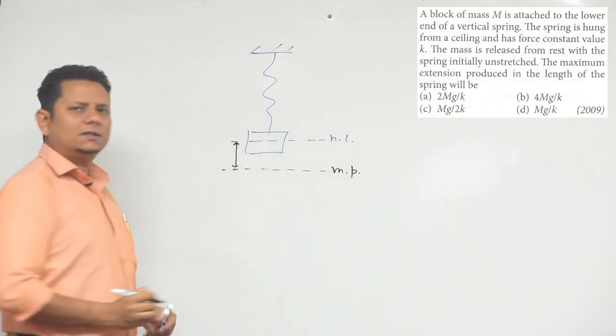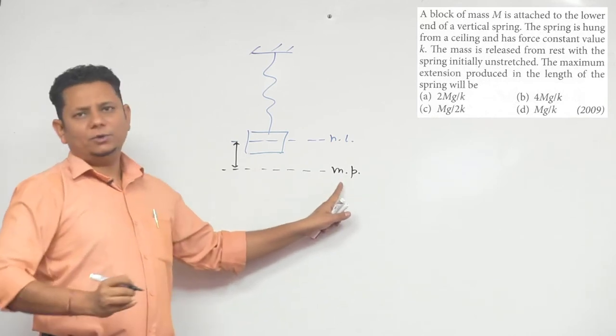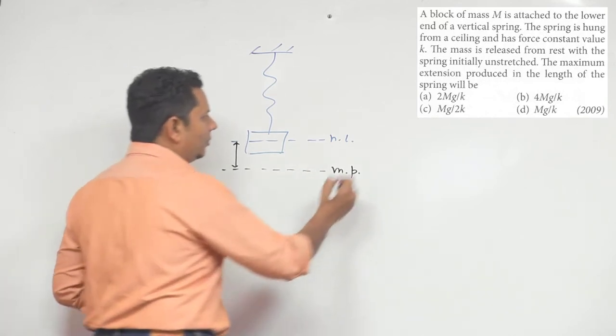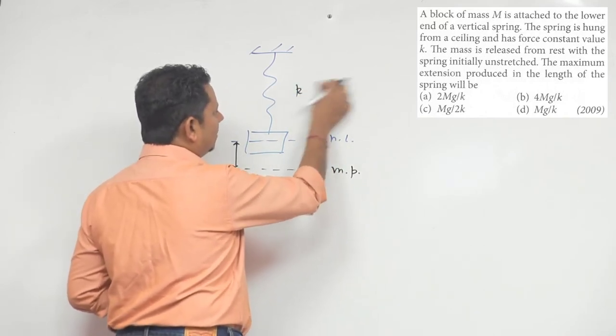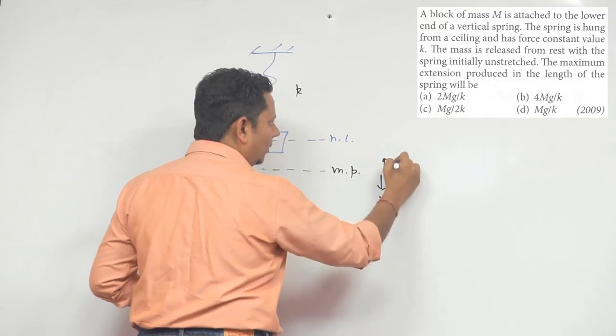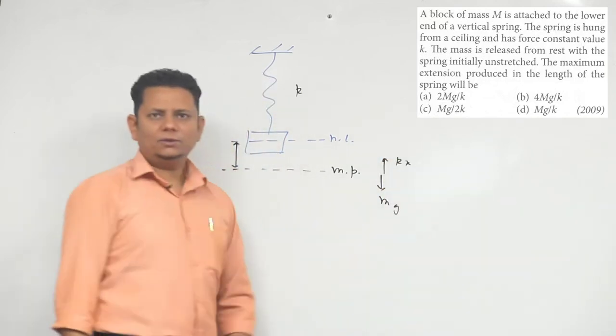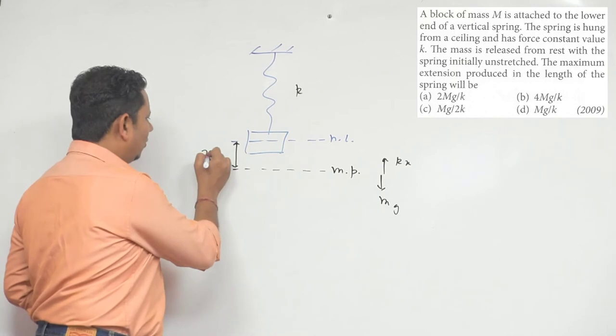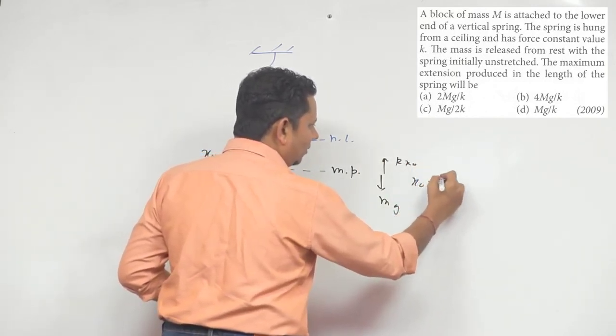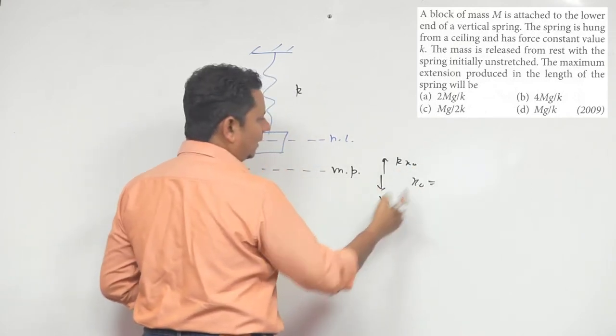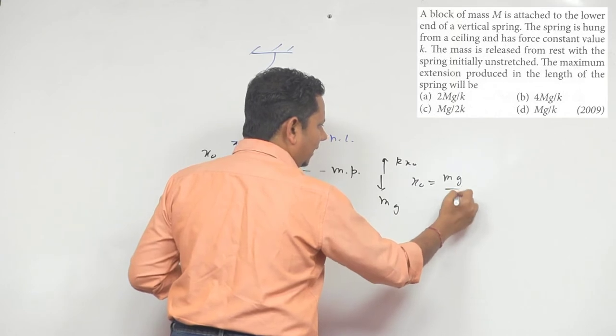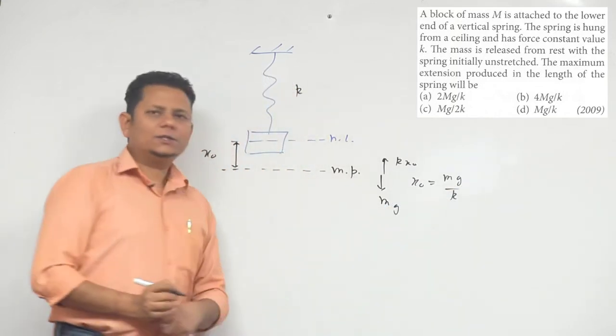You can say the mean position - if it's at equilibrium, then the spring force kx will be equal to mg. So the extension will be mg divided by k. This will be the location of the mean position.